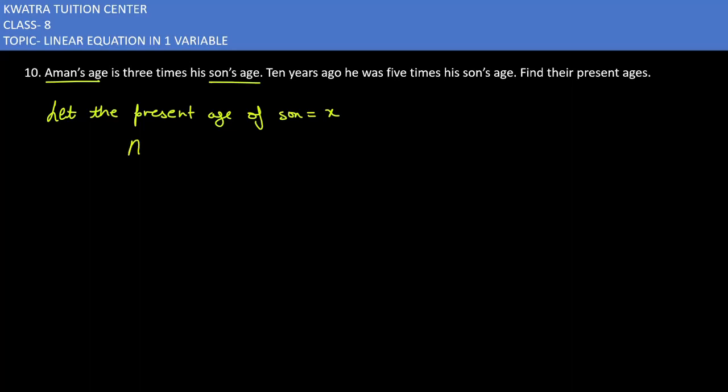And what will be Aman's age? Aman's age would be 3x. Now, it says 10 years ago, he was 5 times his sun's age. If we do this 10 years earlier, then what will be the age of sun?